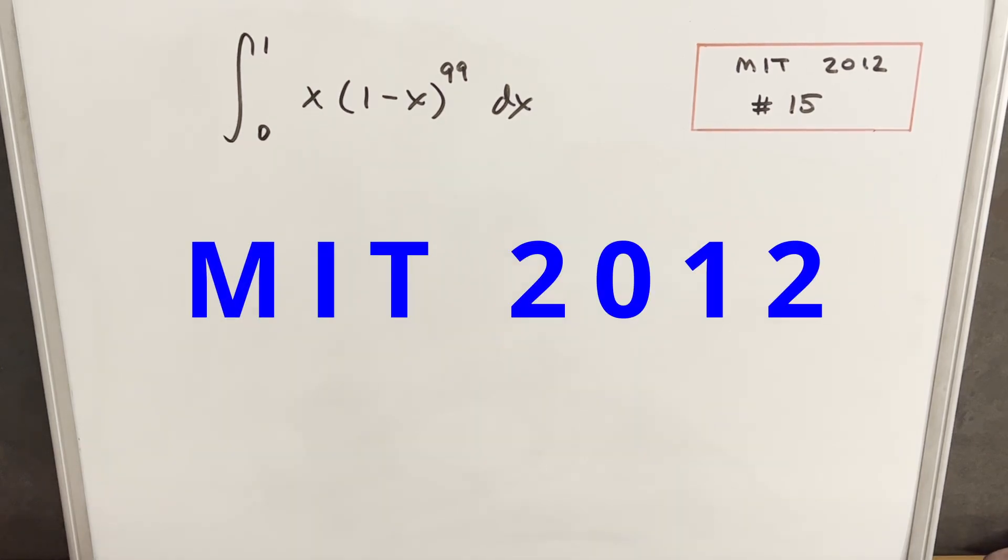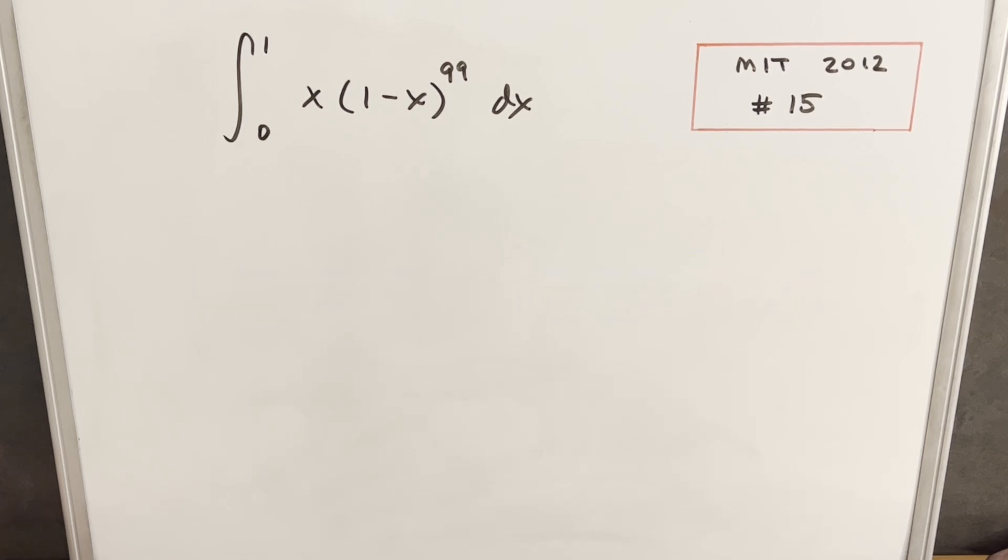Hey, we have here today a quick integral. This one's from MIT 2012, problem 15. We have the integral from 0 to 1 of x times 1 minus x to the 99th dx.